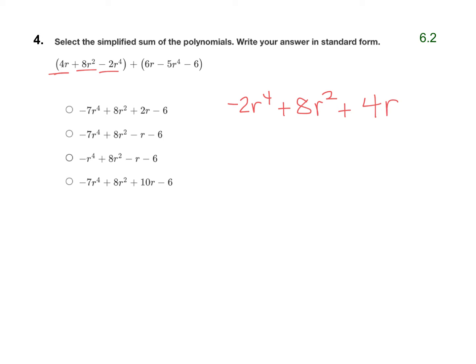Then let's take our second polynomial and again write it in standard form, lining up our terms vertically. Negative 5r to the fourth can line up with the negative 2r to the fourth. The 6r lines up with the 4r, and then the minus 6, the constant, goes on the end.